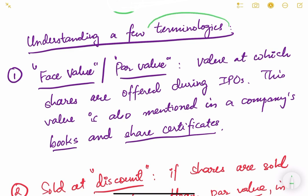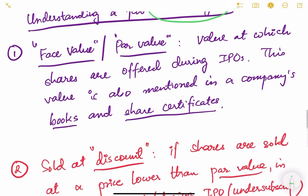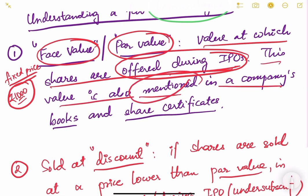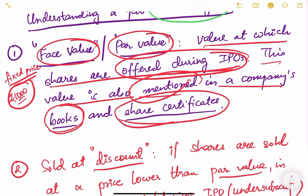Now let us understand a few important terminologies related to IPO and share markets in general. The first is face value or par value — the value at which shares are offered during IPOs. For example, if a company goes for a fixed price IPO and offers shares at rupees 1000, then 1000 is the face value. This value is also mentioned in the company's books and share certificates. After the IPO, secondary market trading can push the price up or down.